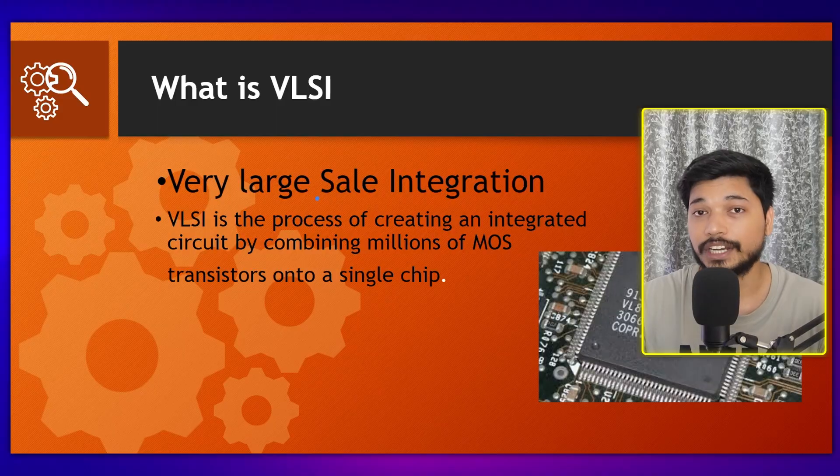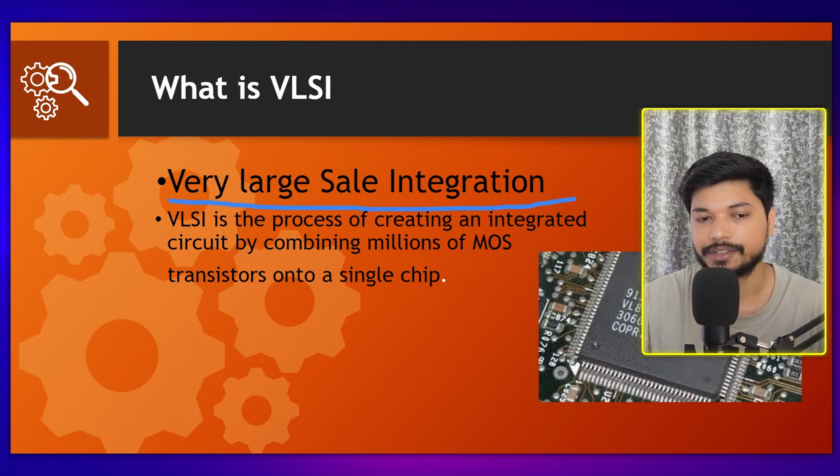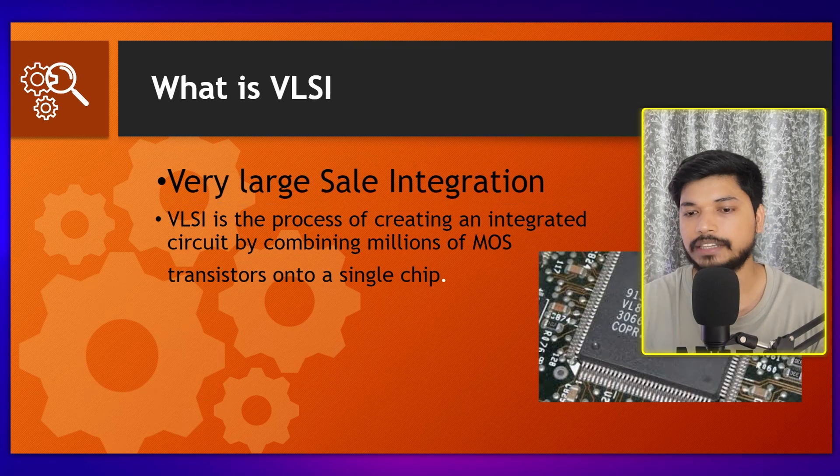First, what is VLSI? It is very important to know what VLSI is before we go further. VLSI stands for Very Large Scale Integration — it is basically a combination of CMOS or integrated circuits. As you can see in the photograph, this is a VLSI chip. Whatever you see in RAM or ROM — that black chip — that is called a VLSI chip.